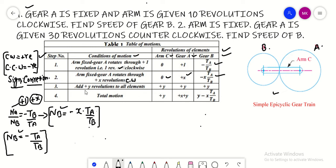Similarly, if I am adding positive Y revolutions to all the elements clockwise, then plus Y for the arm, plus Y for gear A, and plus Y for gear B. Ultimately, if I have to find the value of total motion, it is going to be plus Y here, then X plus Y, then Y minus X TA upon TB. These are the three final equations.